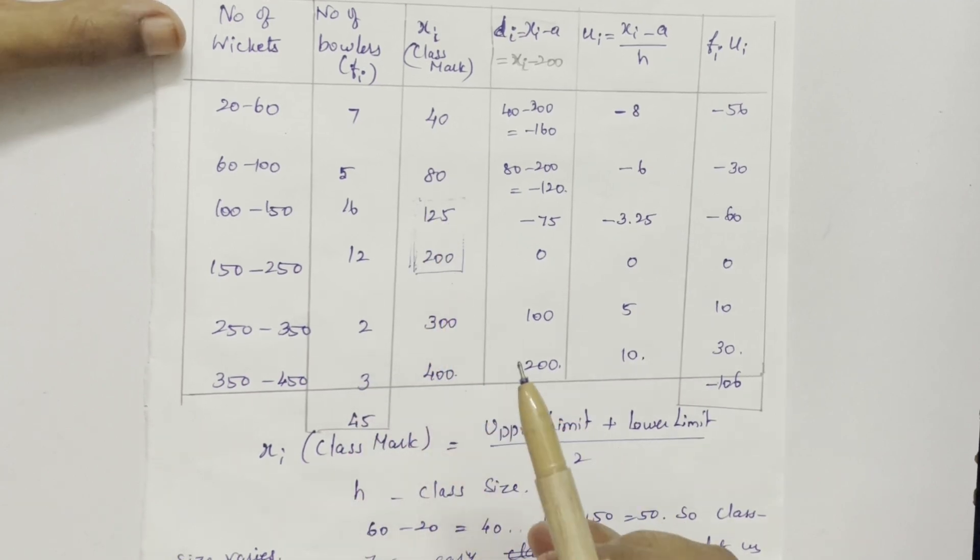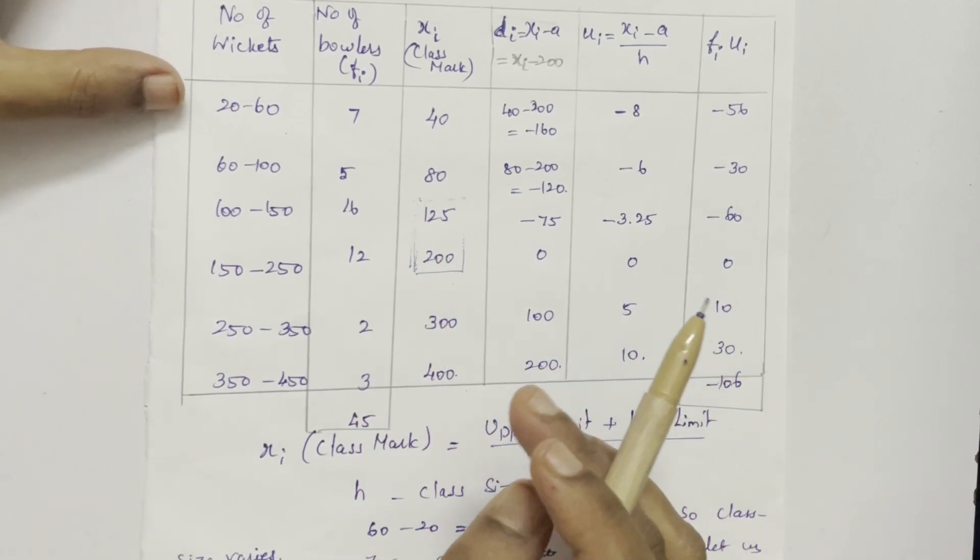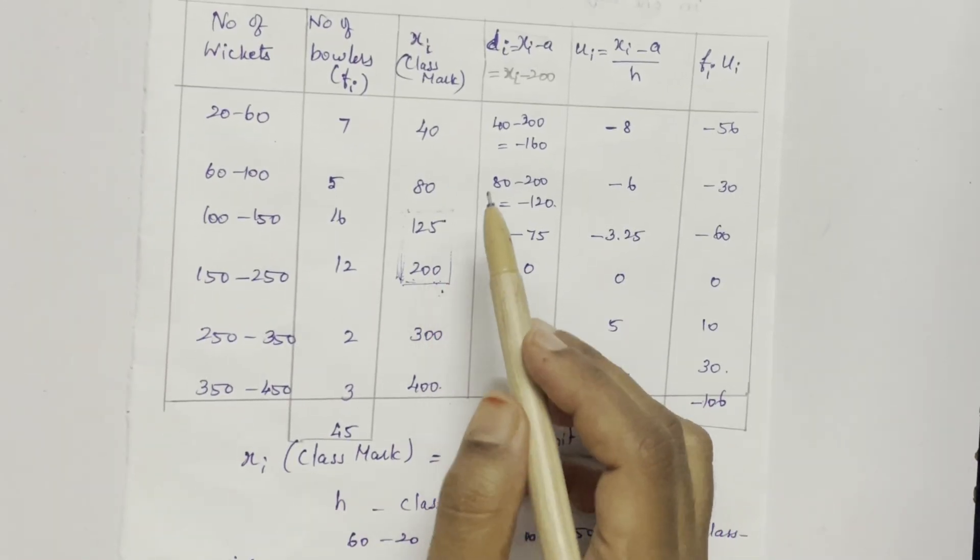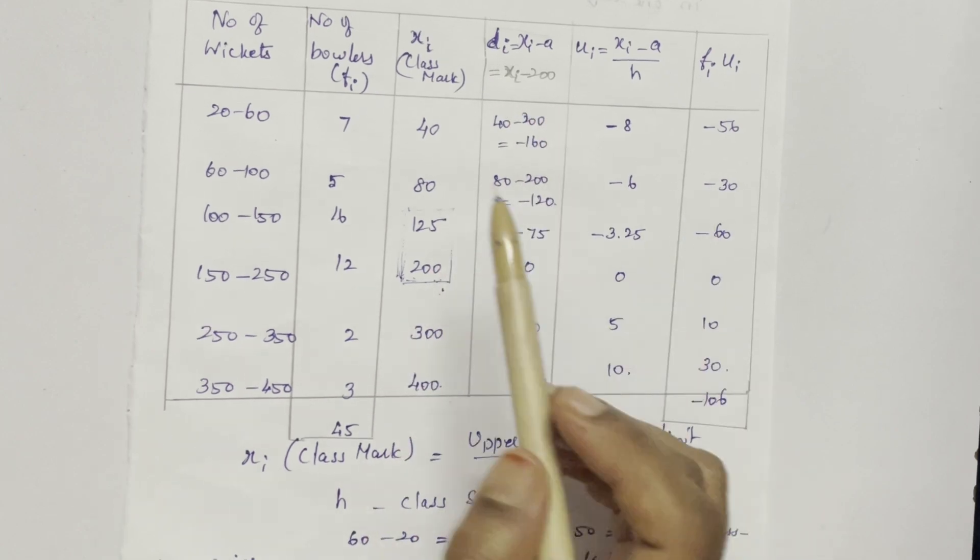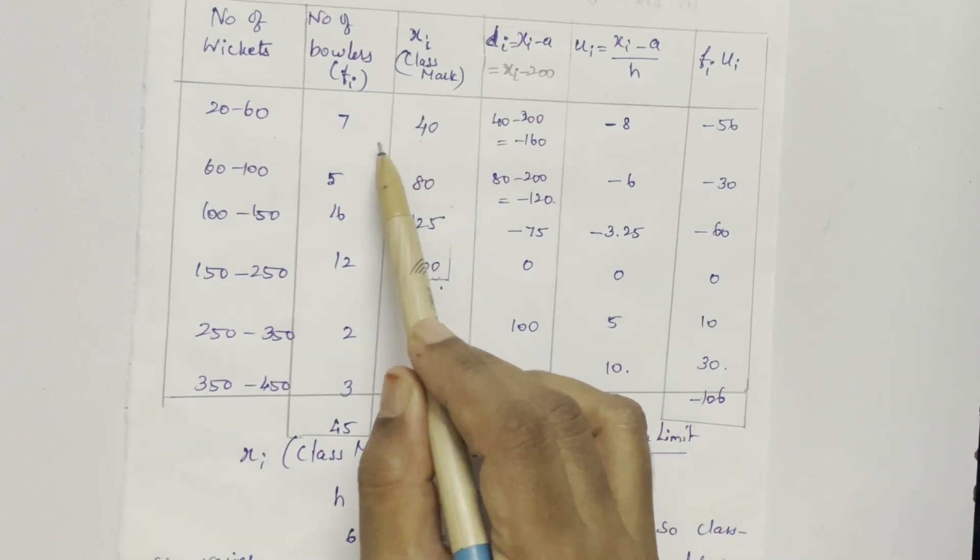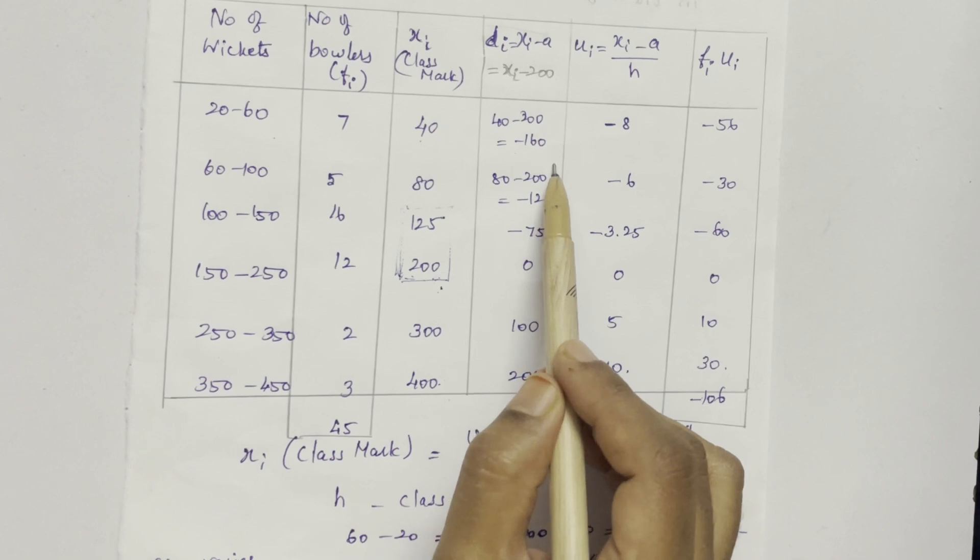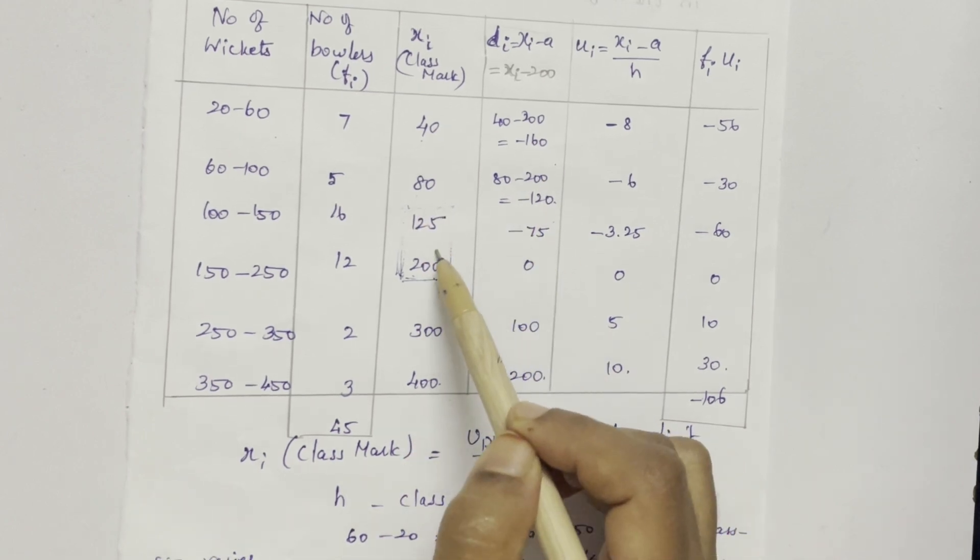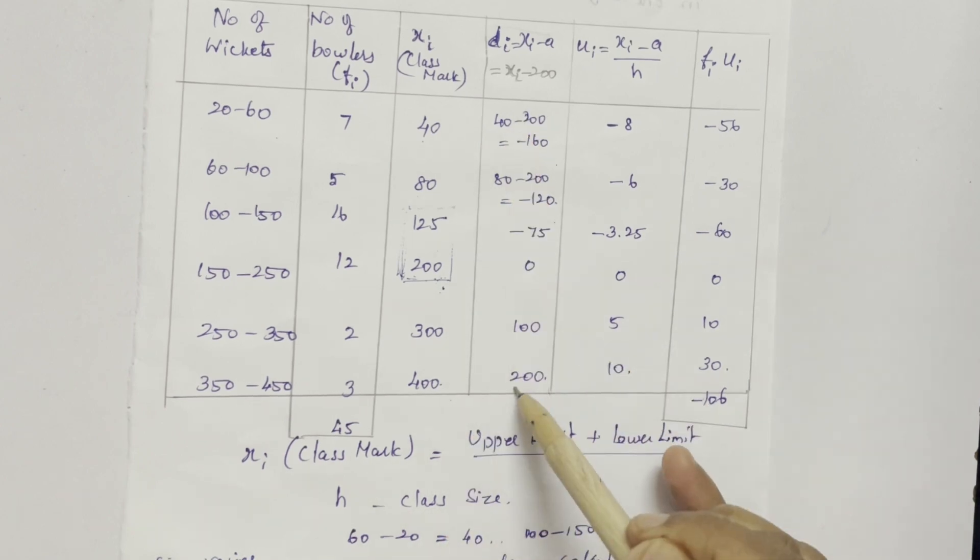Third and fourth. So we have to choose the biggest, fourth one. So we have chosen 200 as the assumed mean. DI equal to XI minus 200. So 40 minus 200 equal to minus 160. 80 minus 200 is minus 120. In that way I have calculated DI here.